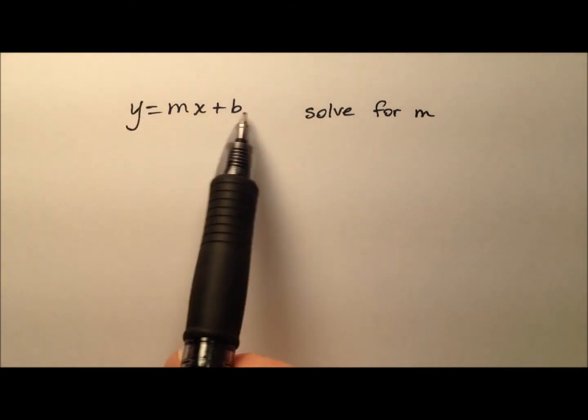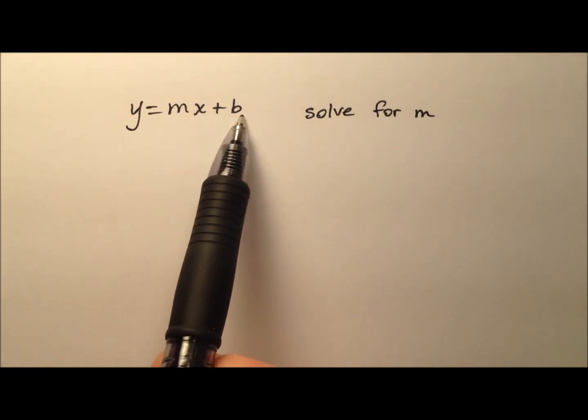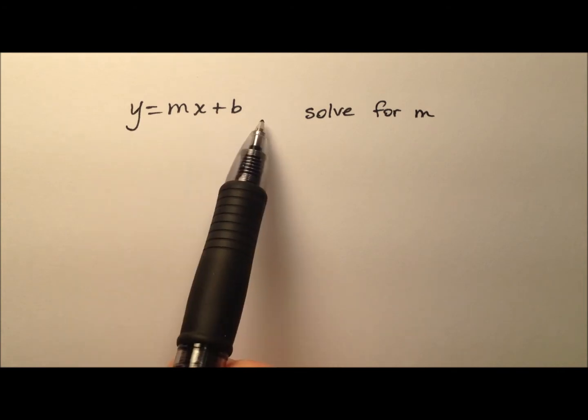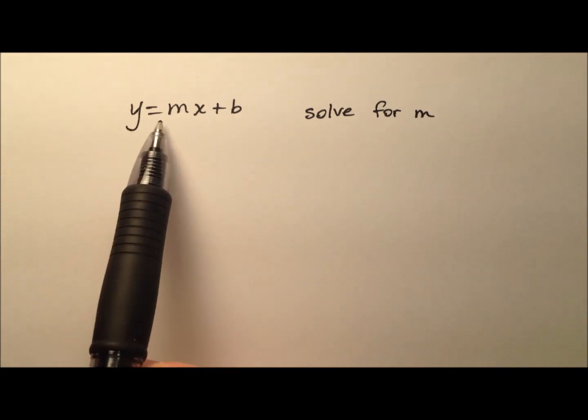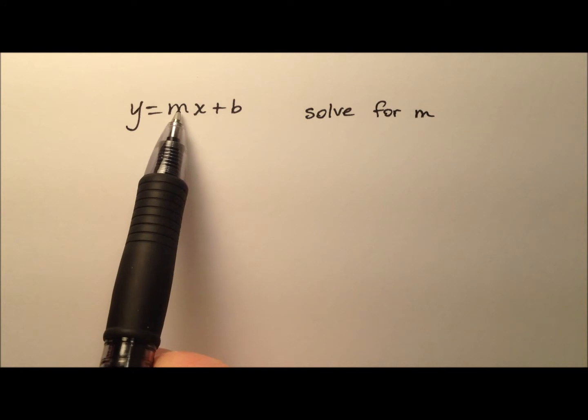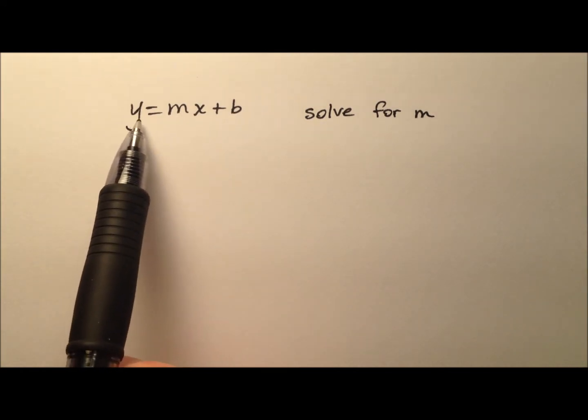In this example, we're given this equation y equals mx plus b, which of course you may recognize as the slope-intercept form for a line, where we have m as the slope and b as the y-intercept.